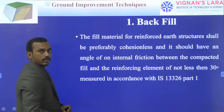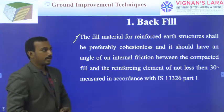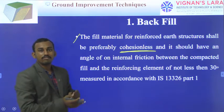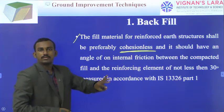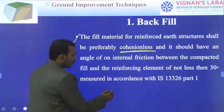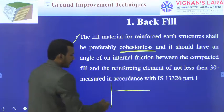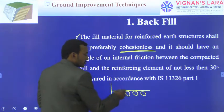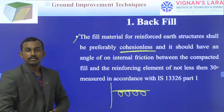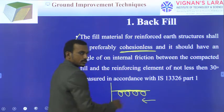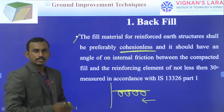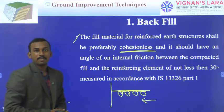Coming to the first component, the backfill. The fill material for a reinforced structure shall preferably be cohesionless soils. We discussed the development of friction between soil particles — in cohesionless soils, there is more friction development between the soil and the horizontal reinforcement layer. Only then can we counteract the lateral forces. That is why we mostly prefer cohesionless soil as backfill. The angle of internal friction between the compacted fill and the reinforcing element should not be less than 30 degrees, measured according to IS 13326 Part 1.